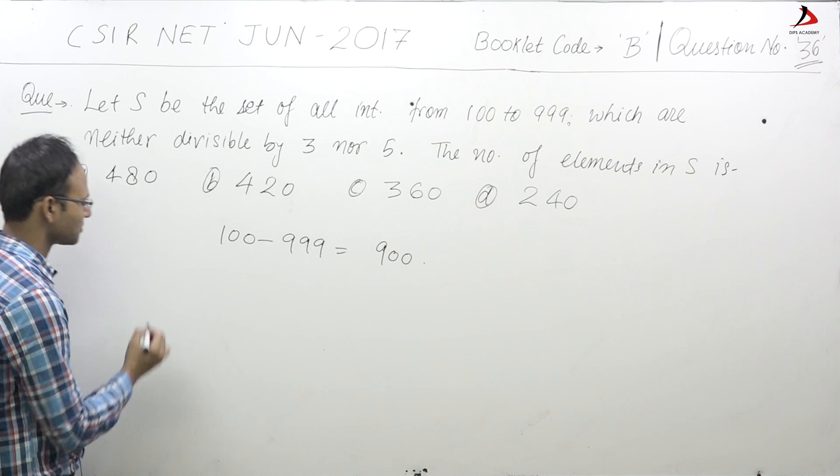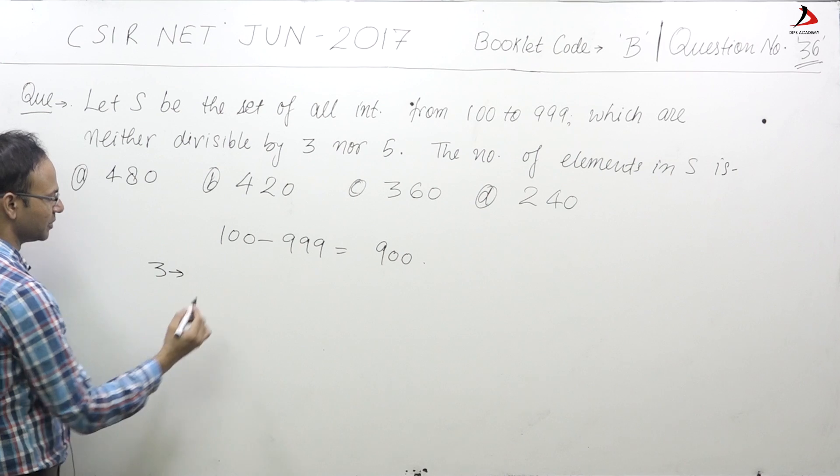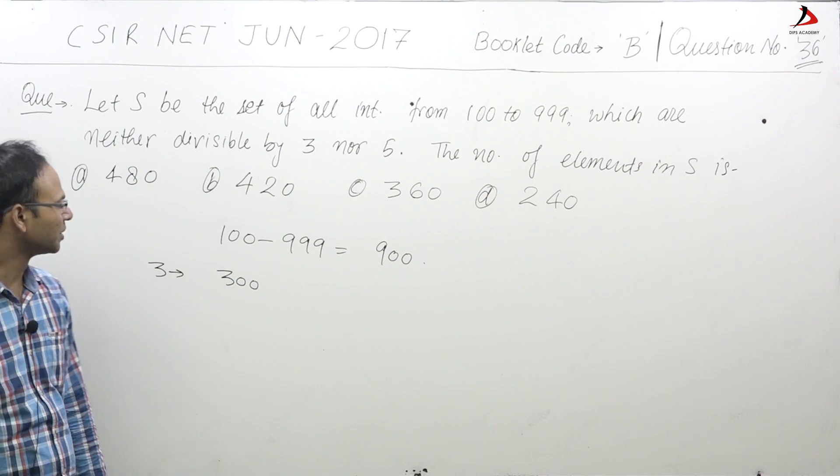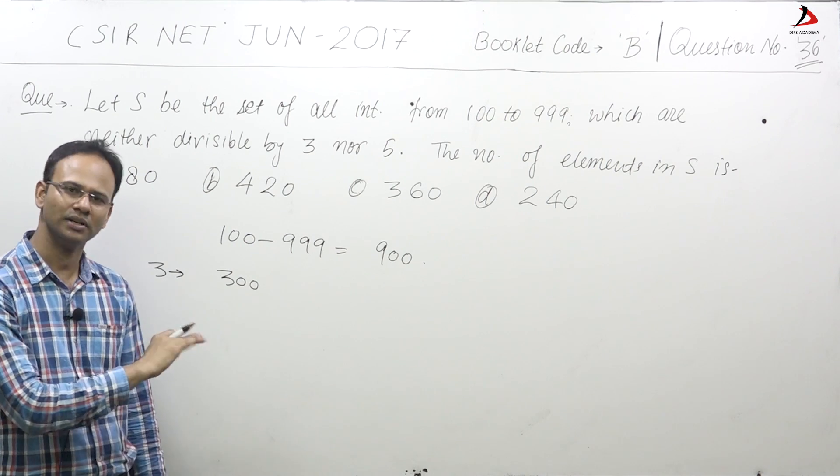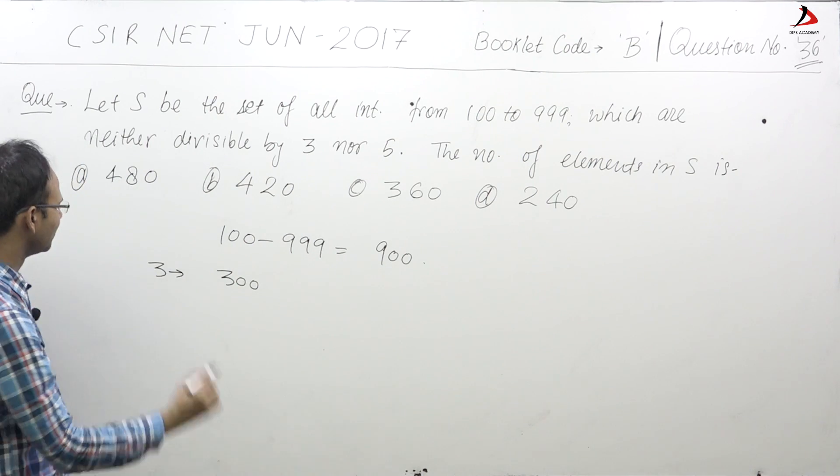The multiples of 3 in these 900 numbers are 300. Obviously, if you divide 900 by 3 you will get 300. Please don't go with the AP, just divide 900 by 3.